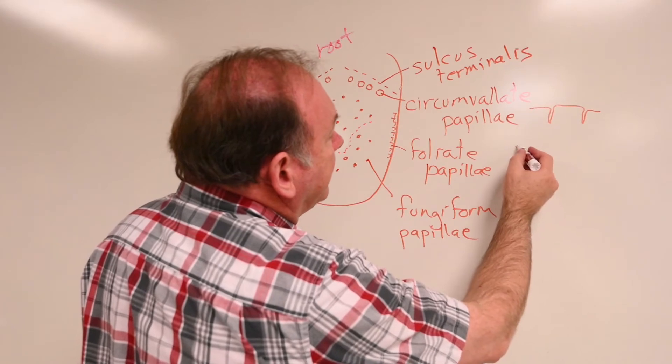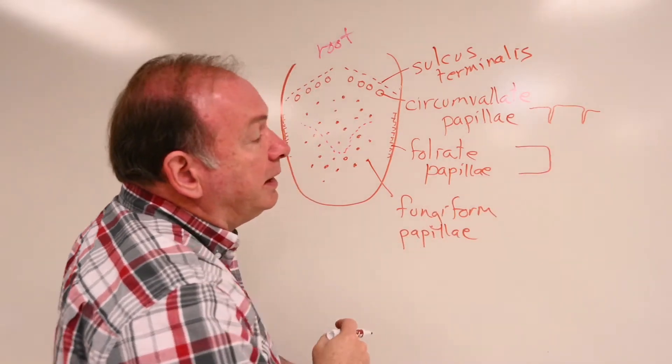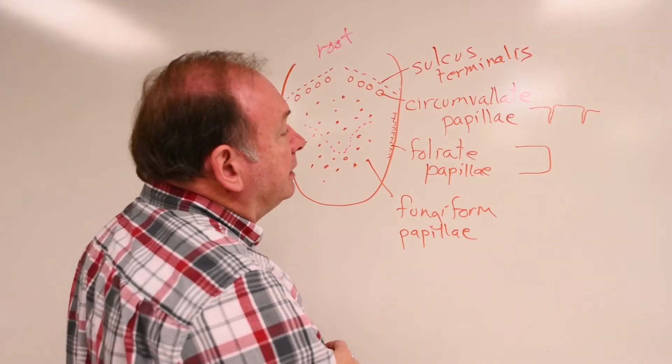Foliate papillae, like I said, are oar-shaped. On the end, they stick out and are flattened things.